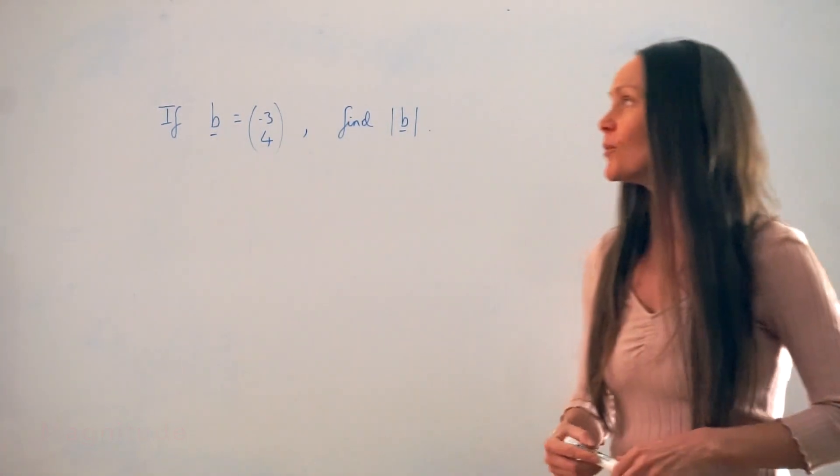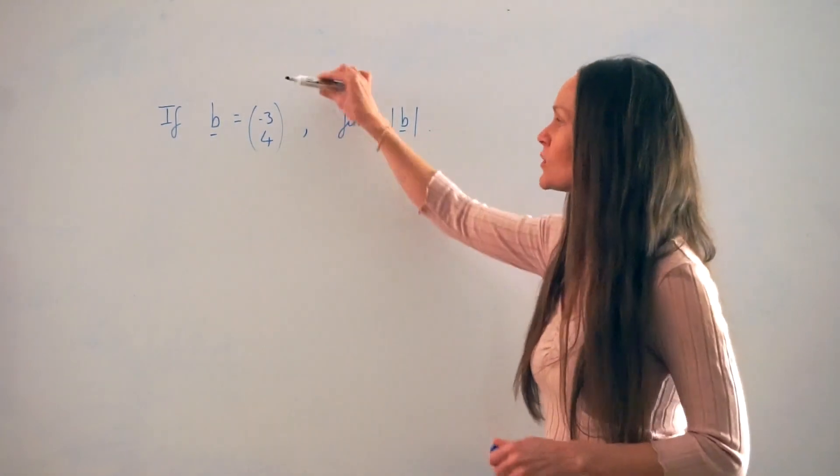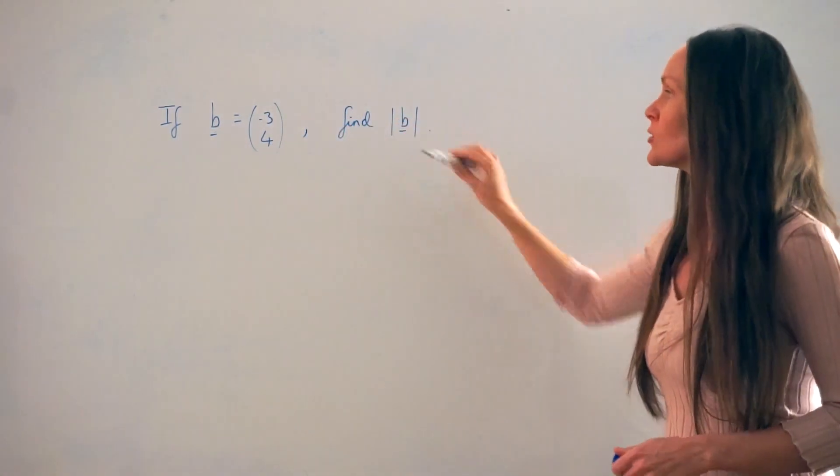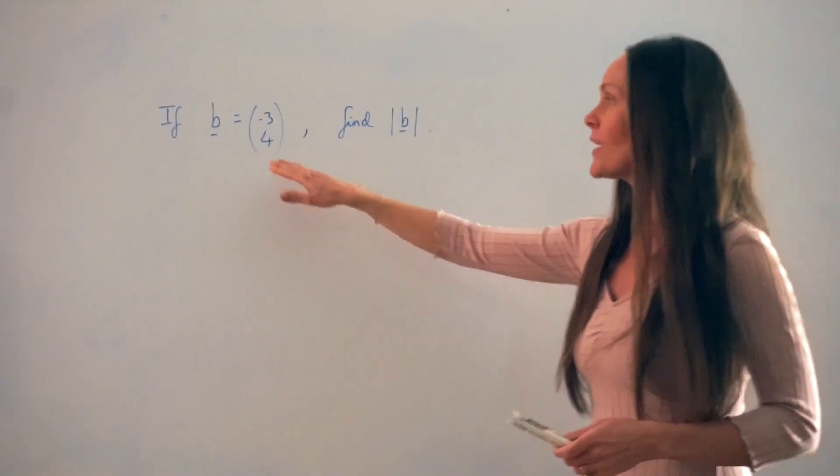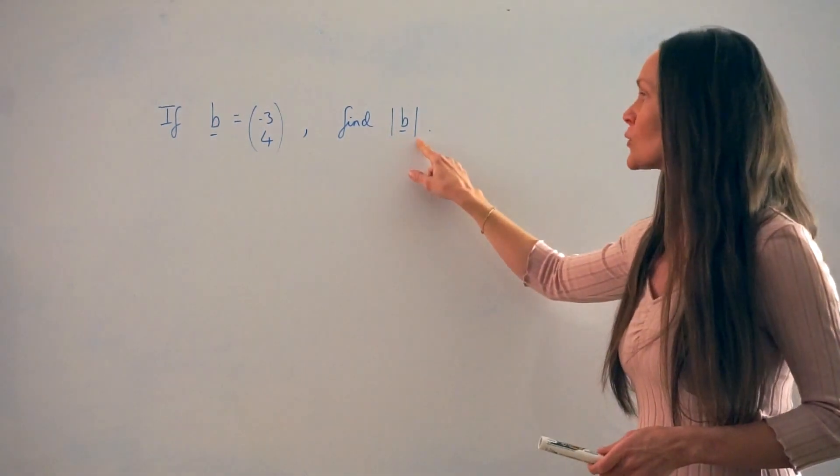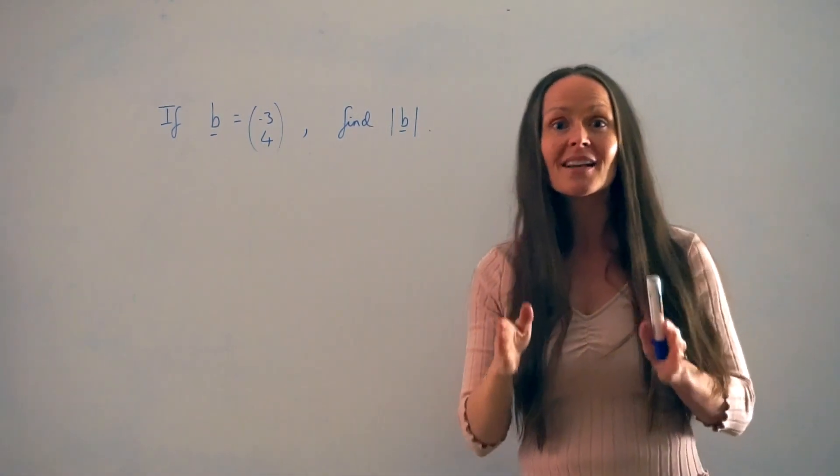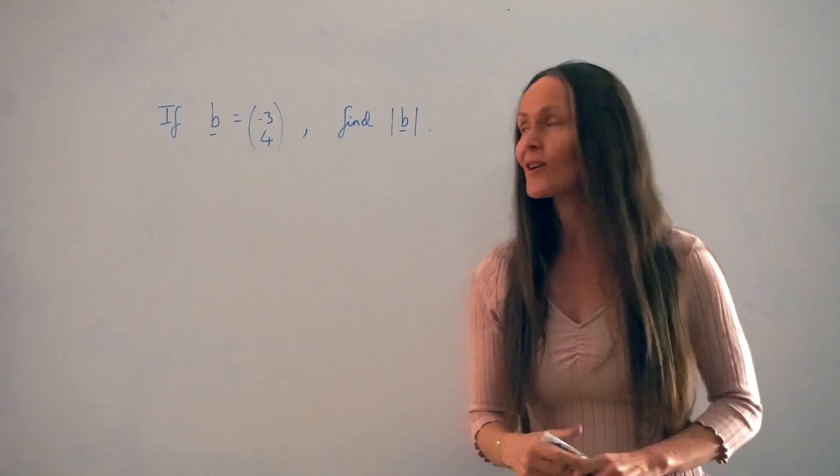So in our example, it says, if b is equal to minus 3, 4, find the modulus of b. Our vector is over here, and if you see these vertical bars either side of the vector letter, it means find the modulus.